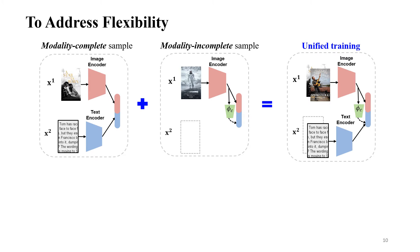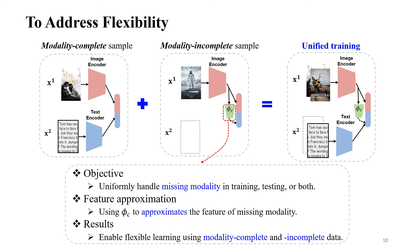Let's look at how we address flexibility. The key challenge is tackling missing modality during training, because once our model can handle missing modality in training, it will be straightforward for it to handle missing modality in testing. During training, we have two types of samples. For modality complete samples, we handle them the same as conventional multimodal learning, using late fusion to get the joint feature. For modality incomplete samples, we introduce a feature approximation network phi_c to approximate the feature of the missing modality. We combine these two frameworks to get a unified training framework that enables flexible learning using both modality complete and incomplete data.